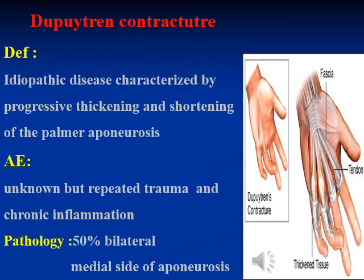The last topic is Dupuytren's contracture, which is a dysplastic disease characterized by progressive thickening and shortening of the palmar aponeurosis — a fibrous fascia found on the palmar aspect of the hand. The main etiology is unknown, but repeated trauma and chronic inflammation may be implicated. It is bilateral in 50% of cases and affects the medial side of the aponeurosis.